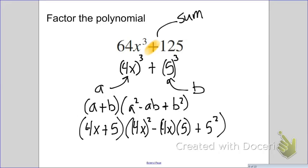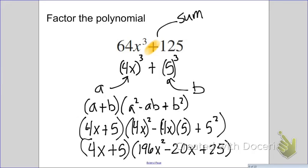Minus A is 4X times 5 plus 5 squared. I have some kind of simplification I need to do here. So, let's rewrite this as 4X plus 5. That doesn't change. 4 squared is 16, followed by our X squared. We have a 4 and a 5 I need to multiply for 20X. And then, 5 squared is 25. So, these are the two factors that, if you multiply, actually do make 64X cubed plus 125.